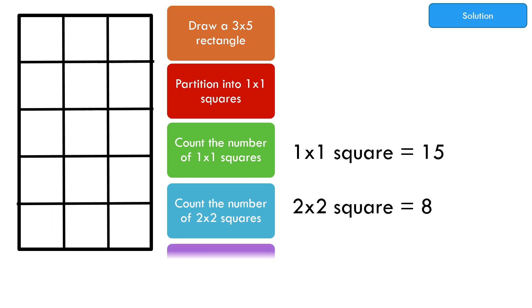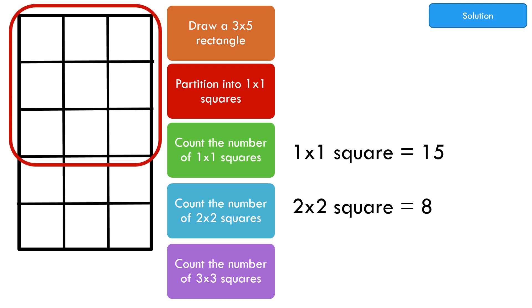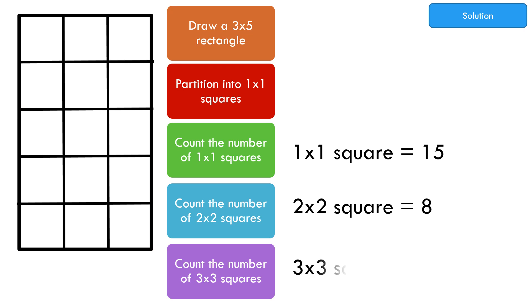Count the number of 3 by 3 squares. Counting: 1, 2, 3. There are 3 three-by-three squares.